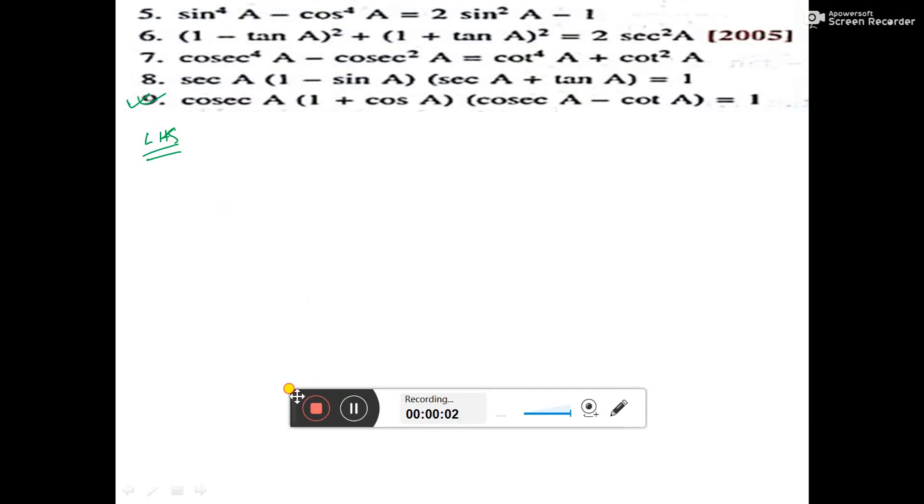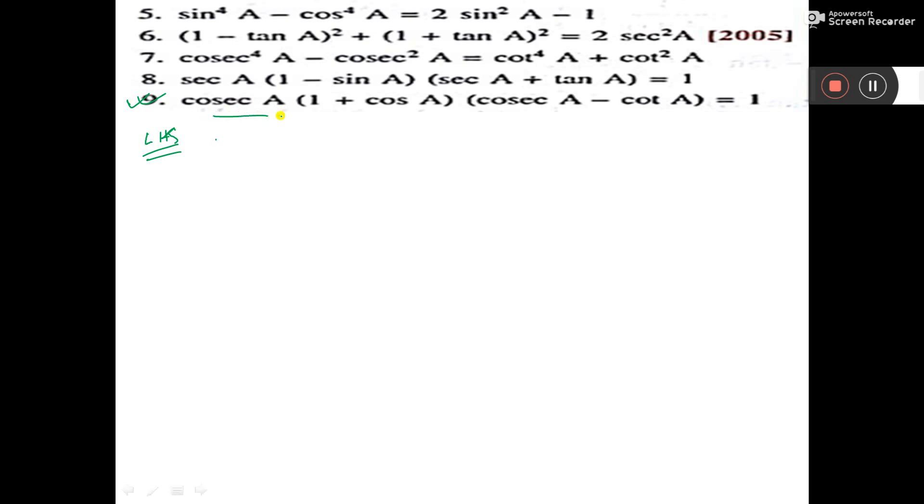I am taking the left hand side. So it is cosec A into 1 plus cosec A into cosec A minus cot A.